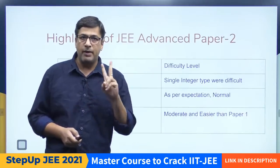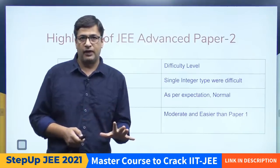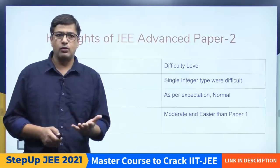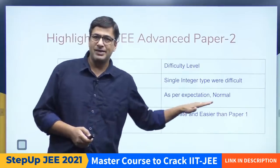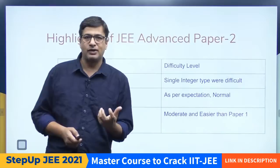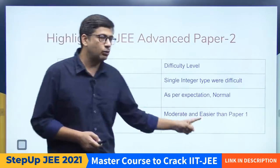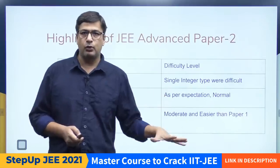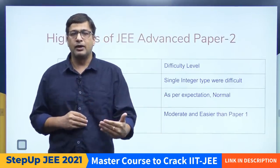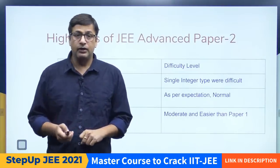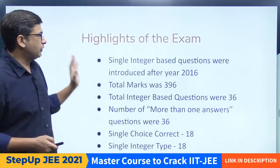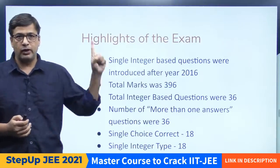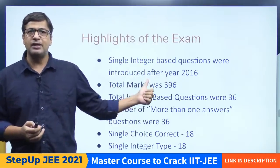Paper 2 physics और paper 1 maths — यह दोनों extremely difficult questions थे। Chemistry as per expectation थी, easy नहीं बोल सकते, normal थी लेकिन calculation और error के chances थे। Maths paper 2 was relatively easier than paper 1 but फिर भी advance का paper था तो easy नहीं था। Physics के single integer questions were really difficult. Overall highlights: single integer based questions introduced after 2016, total marks 396।